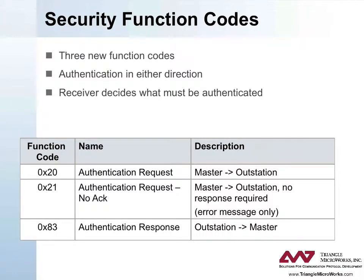In practice, the core of the DNP3 secure authentication mechanism is three new function codes. Almost every security message will use one of these function codes. This permits non-secure devices to clearly identify that secure devices are using a feature they do not support, and raise a configuration error.